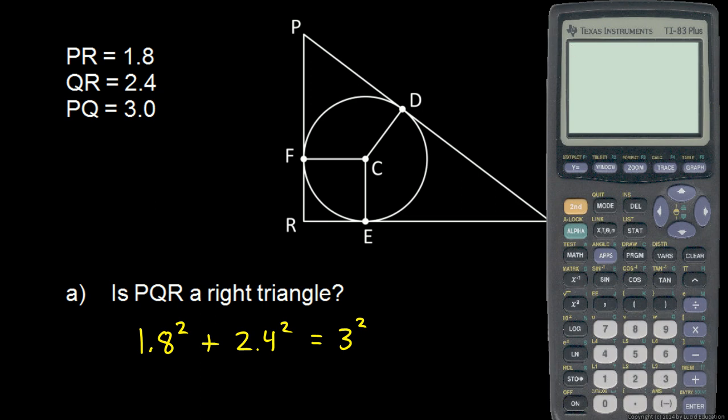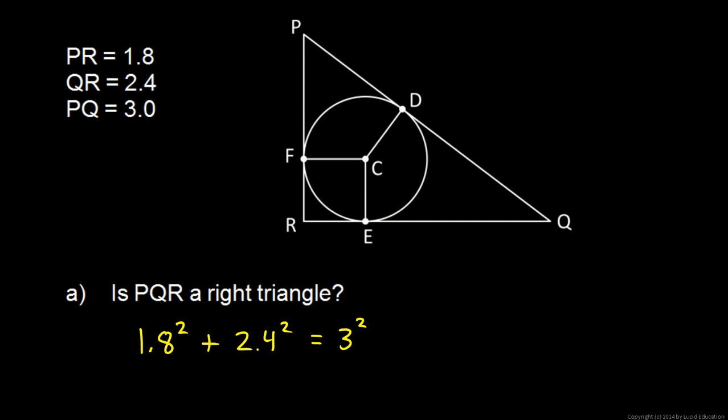So let's check. 1.8, we'll just type this into the calculator, 1.8 squared, plus 2.4 squared, is 9. That's 3 squared. So the answer is yes. It is a right triangle.